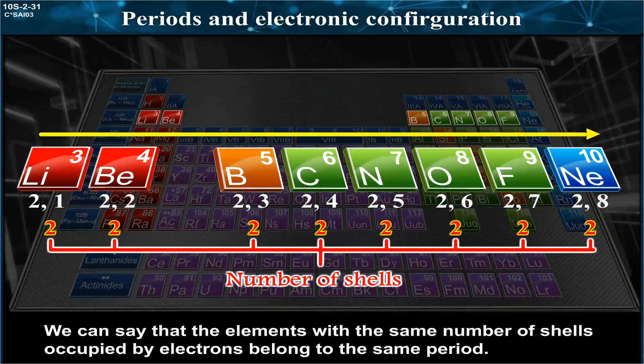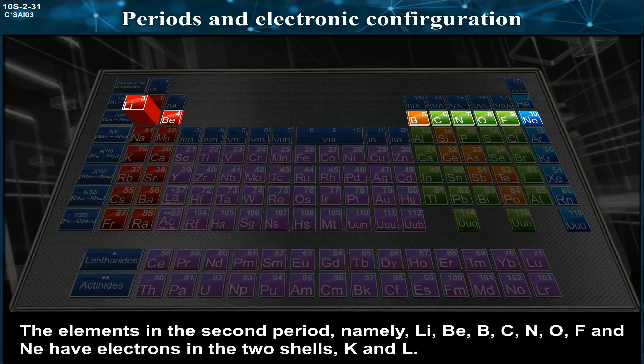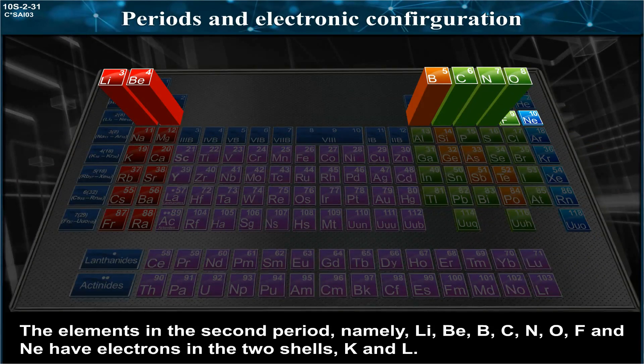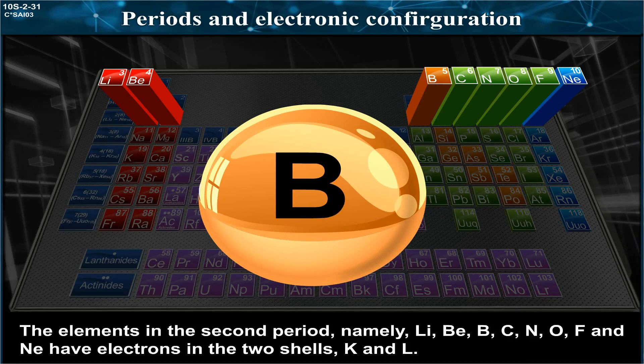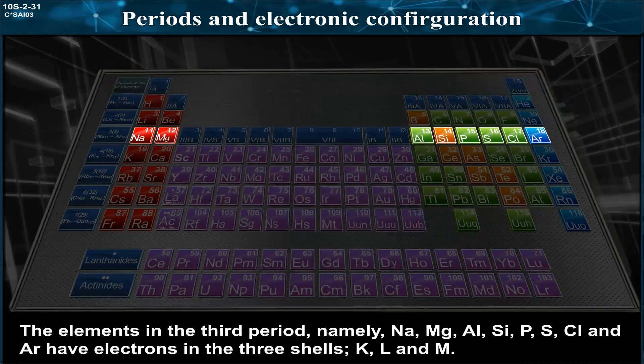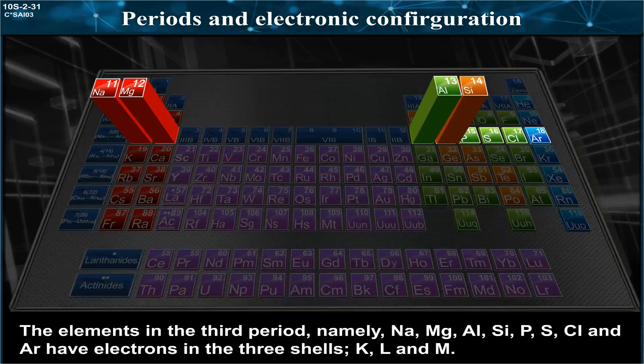The elements in the second period, namely Li, Be, B, C, N, O, F, and Ne, have electrons in the two shells K and L. The elements in the third period, namely Na, Mg, Al, Si, P, S...